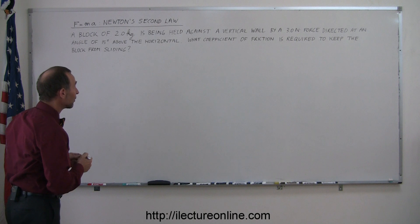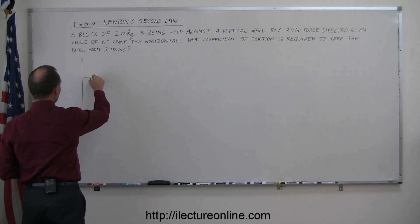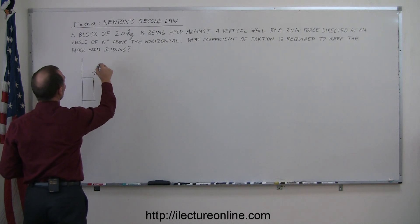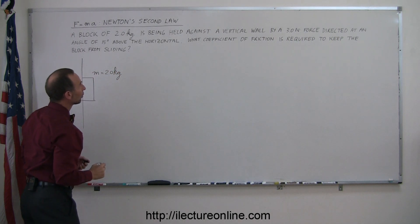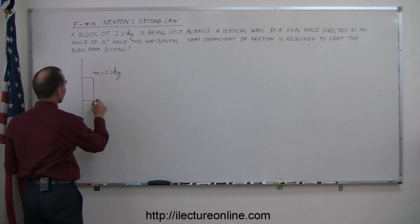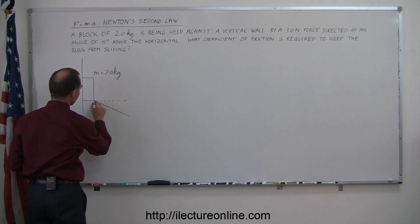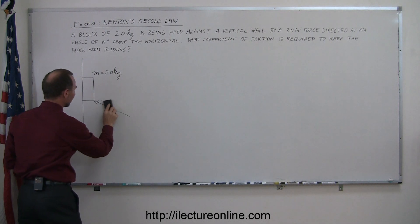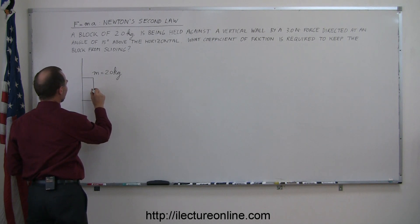If we draw a picture of this, we'll have a better idea of what's going on. So here's a vertical wall, here's a block, the block has a mass equal to two kilograms, and there's a force keeping the block against the wall, making an angle of 15 degrees above the horizontal. Let me apply the force towards the middle of the block.